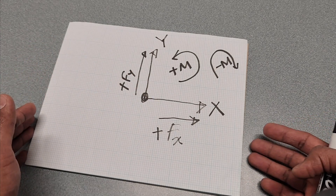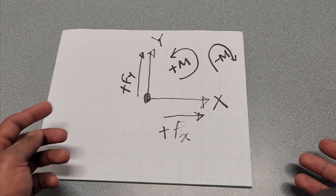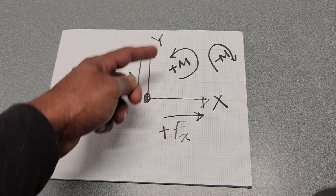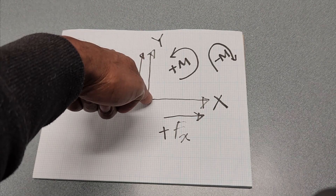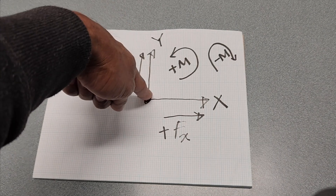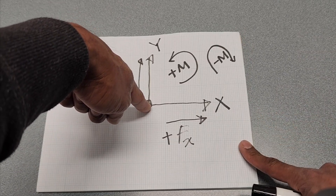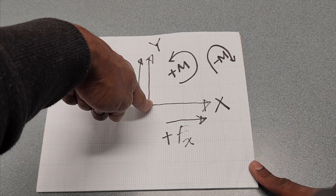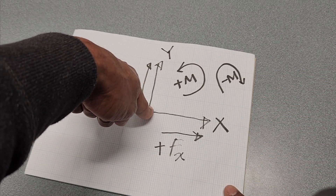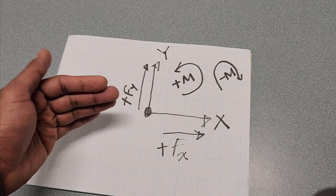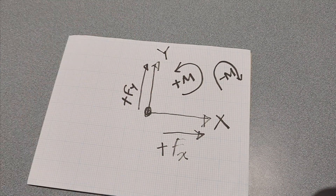To summarize: when calculating moment, the sign is determined with respect to the point of rotation — the object is fixed at that point and rotates around it. If the rotation is counterclockwise, the moment is positive; if it is clockwise, the moment is negative. For forces, the positive x-axis is to the right and the positive y-axis is upward.